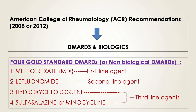Moving to disease-modifying anti-rheumatic drugs (DMARDs): according to the American College of Rheumatology (ACR) recommendations in 2008 and the 2012 update, there are four gold standard DMARDs. These are: first, methotrexate; second, leflunomide; third, hydroxychloroquine; and fourth, sulfasalazine.